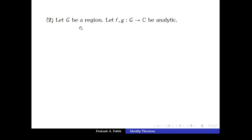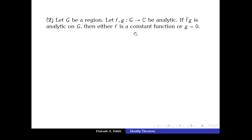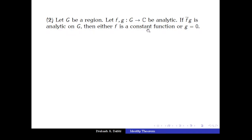So we have shown: if G is a region and f, g are analytic on G with f·g ≡ 0, then either f ≡ 0 or g ≡ 0. Now the next example: let G be a region and f, g from G to ℂ be analytic. Suppose that the function f̄ (conjugate of f) times g is analytic on G. We need to show that either f is a constant function or g is identically zero.